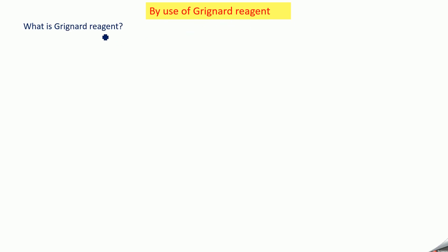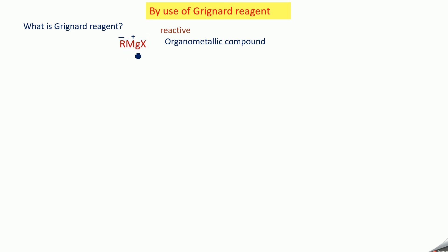We can also prepare an alkane using Grignard reagent. The Grignard reagent is an organometallic compound written as R-MgX — alkyl magnesium halide — and it is highly reactive. To prepare it, take an alkyl halide on treatment with magnesium in the presence of dry ether, and you will be getting R-MgX.